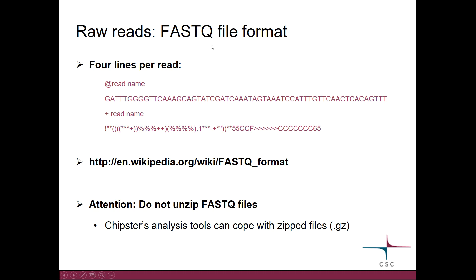When you get your reads from the sequencing facility, you typically get a FastQ file. In this file you have the reads, typically tens of millions of them. And for each read, there are actually four lines. The first line is a read name — every read has a name. Then the name is repeated, and then there is this rather strange-looking piece of text.